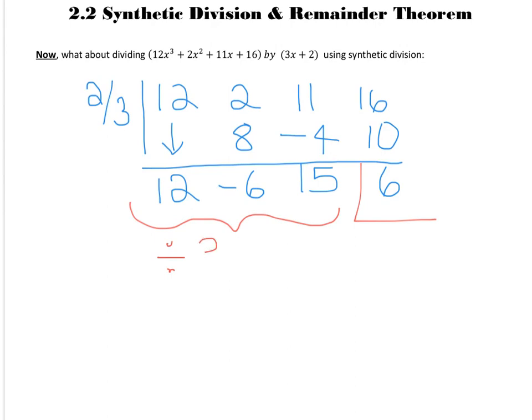Except what we do here is we divide all of these coefficients by the coefficient of the divisor. So, in this case, we divide by 3. So, our quotient isn't actually 12x squared minus 6x plus 15. Our quotient is actually 4x squared minus 2x plus 5.